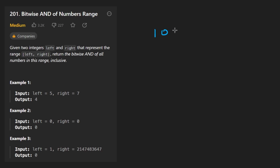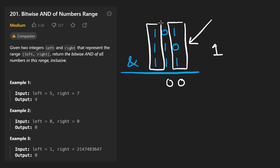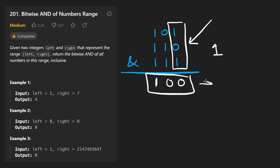What is a bitwise AND? Take the numbers five, six, and seven in binary. To bitwise AND these is to take every single column, and if all of them are one, we put a one in the output. If not — if one of them is a zero — we put a zero in the output. Doing the same for each column, the result here is binary 100, which in base 10 is the number four.